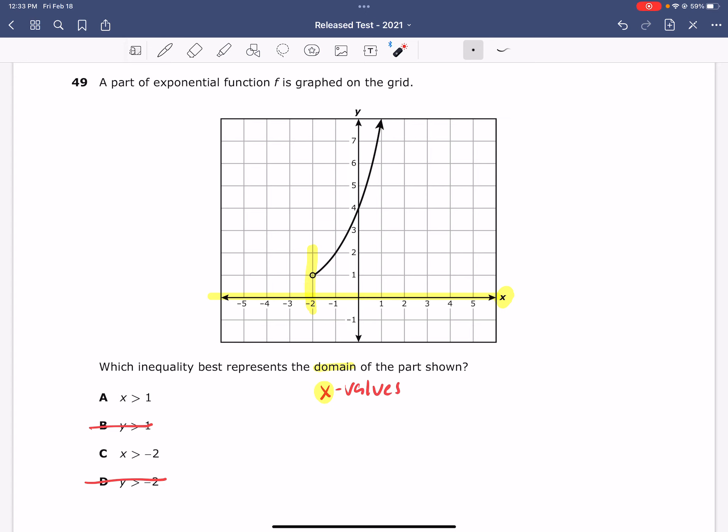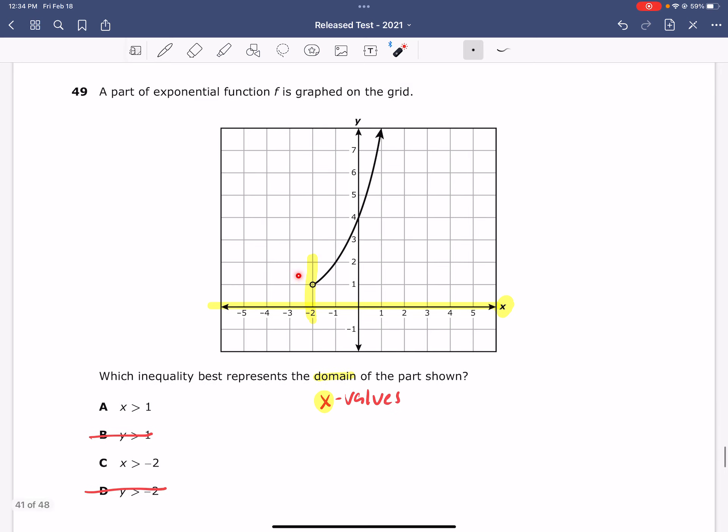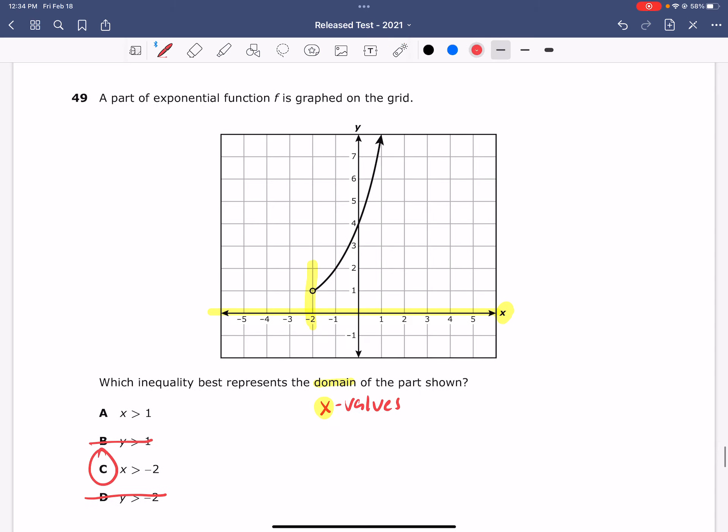The reason we have a greater than and not a greater than or equal to is because this is an open circle. Sometimes you'll be able to eliminate answer choices based on open versus closed. But none of our answer choices had or equal to on the inequality sign, so we weren't able to eliminate any answer choices that way. Because this graph starts on the x-axis at negative 2, we know that our answer is going to be C.